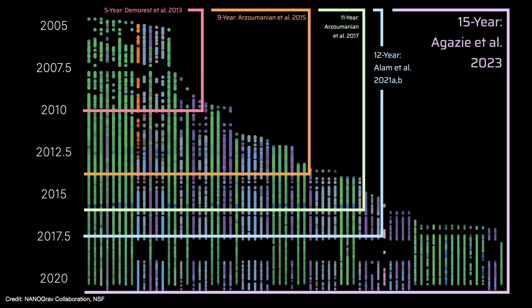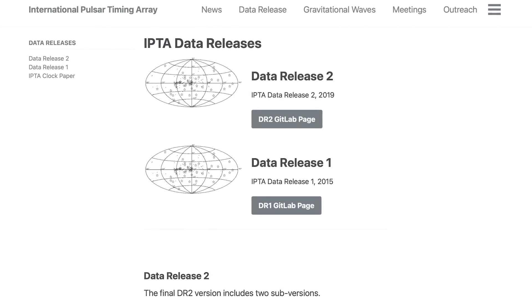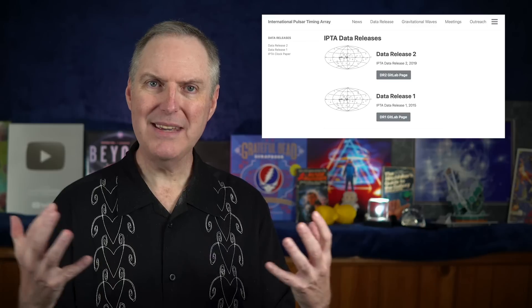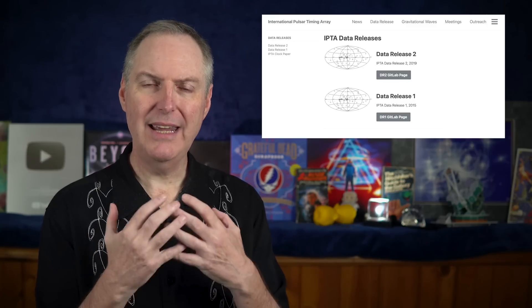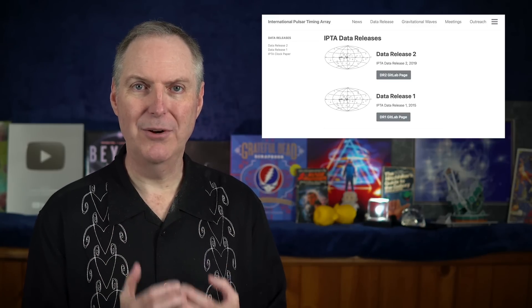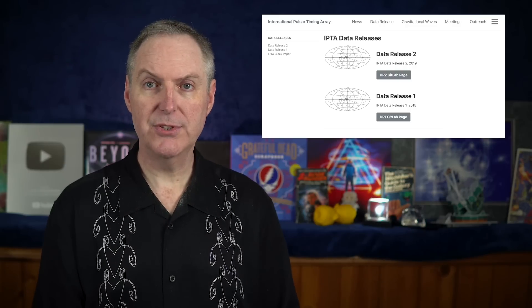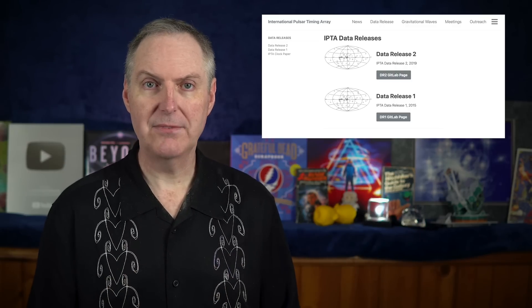And right now, all of the datasets from the American, European, Indian, Australian, and Chinese PTAs are currently being combined into a single international pulsar timing array database. That data release should be ready within the next year or two with more data coming in after that.